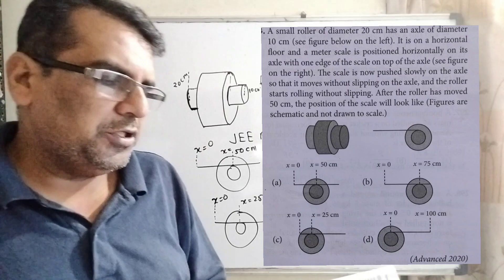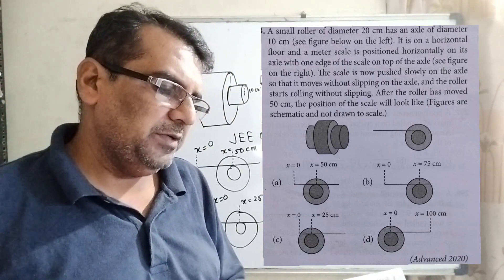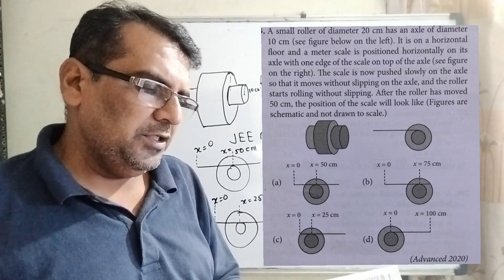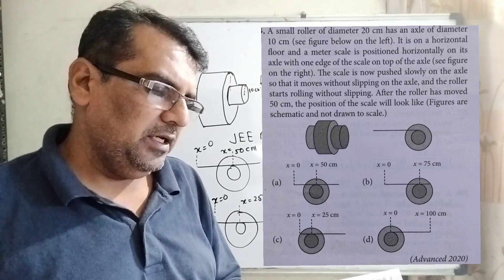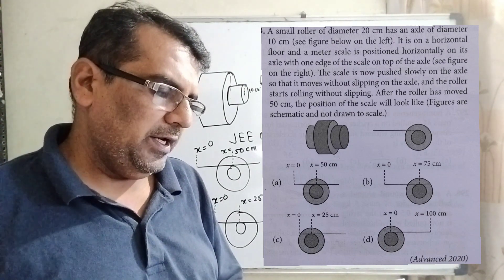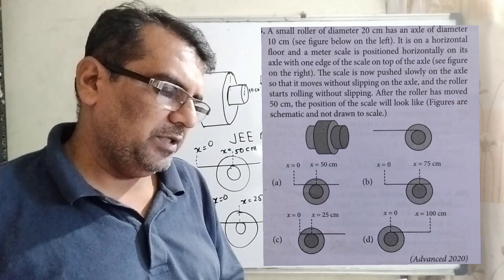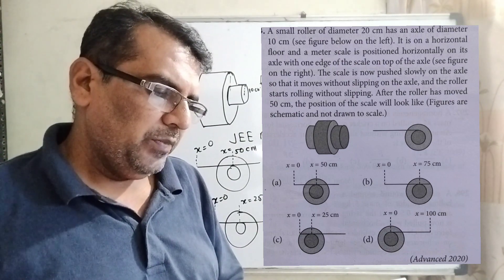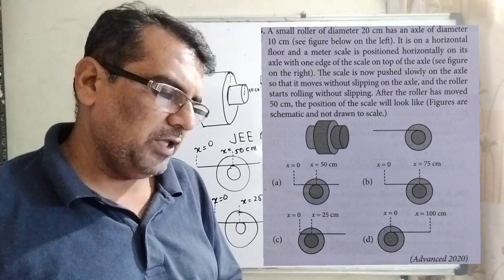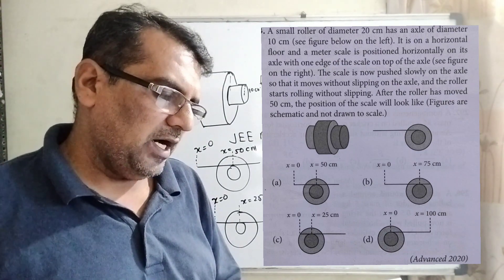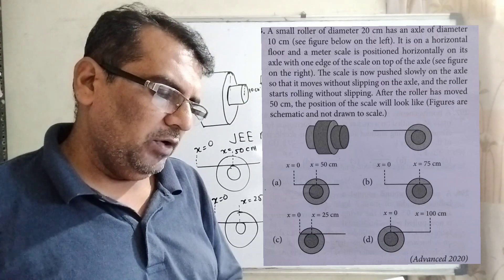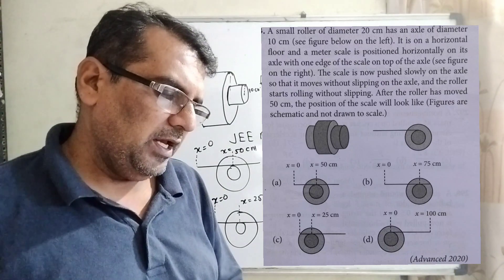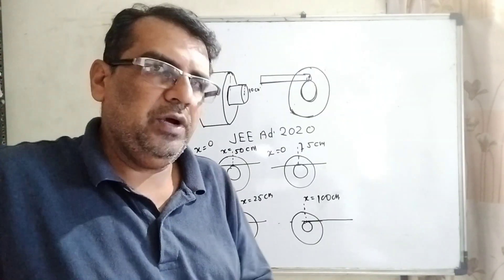Let's move on. What the question says: a small roller of diameter 20 centimeters has an axle of diameter 10 centimeters. It is on a horizontal floor and a meter scale is positioned horizontally on its axle with one edge of the scale on top of the axle. The scale is now pushed slowly on the axle so that it moves without slipping on the axle, and the roller starts rolling without slipping. After the roller has moved 50 centimeters, the position of the scale will look like - and you are given four options.